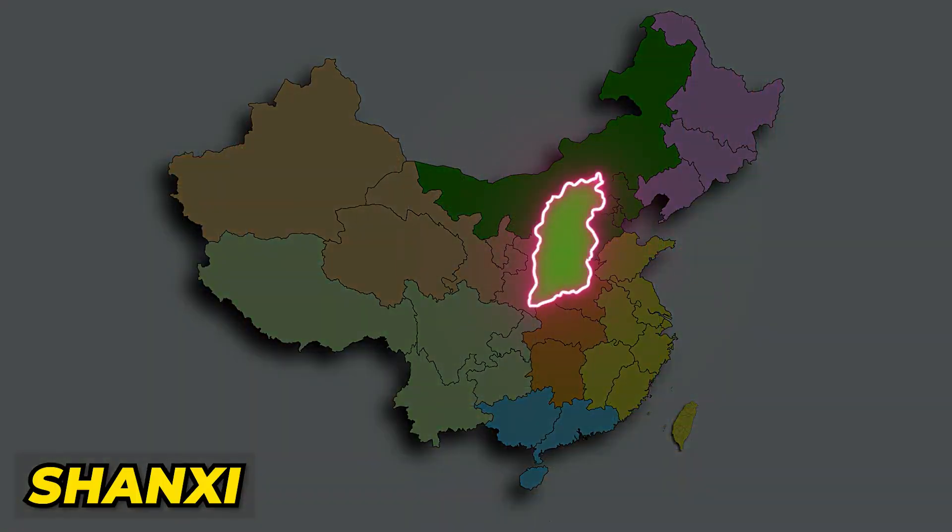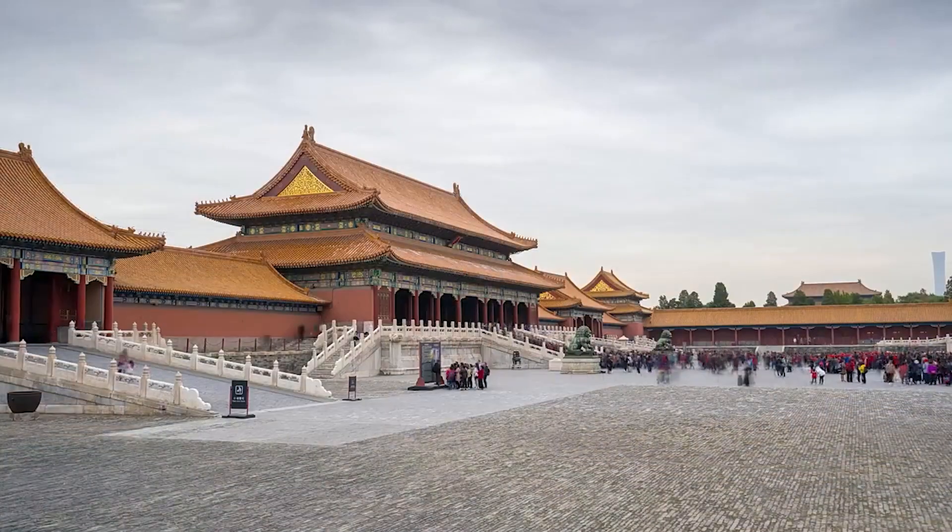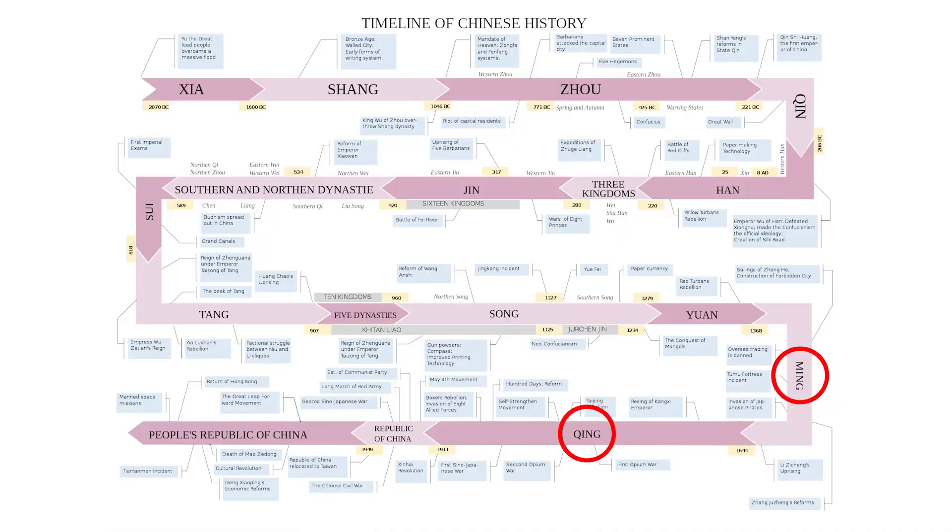Let's start with the capital, Beijing, within North China. In this region, there are also Tianjin, Hebei Province, Shanxi Province, and Inner Mongolia Autonomous Region. Beijing, literally meaning 'Northern Capital,' is the culture, politics, and education center of China, with a rich history dating back over 3,000 years. As the capital of various dynasties including the famous Ming and Qing Dynasties, it left many historical sites, including no less than seven UNESCO World Heritage sites — notably the Forbidden City, Summer Palace, Temple of Heaven, and parts of the Great Wall of China.